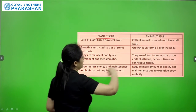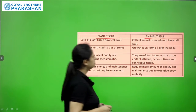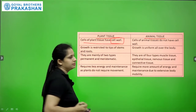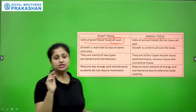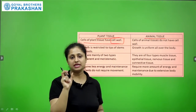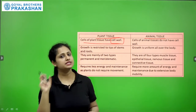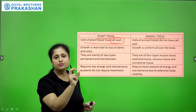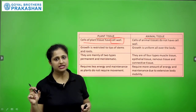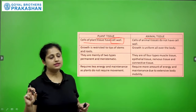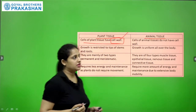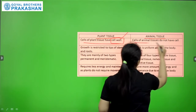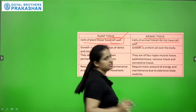Here is the plant tissue and animal tissue. The cells of plant tissue have a cell wall. Plant tissues are made up of cells, and those cells possess a cell wall. Animal tissue, on the other hand — the cells of animal tissues do not have a cell wall.